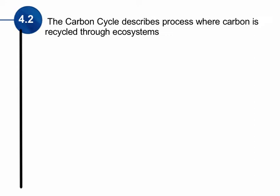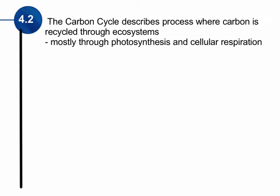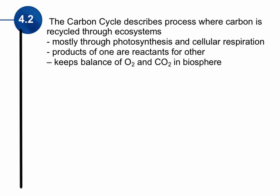The carbon cycle is a process where carbon is recycled through ecosystems, constantly cycling through. Most times this recycling occurs through photosynthesis and cellular respiration. Plants take in carbon dioxide and release oxygen. Cellular respiration takes in oxygen and releases carbon dioxide. The products of one are the reactants for the other, which keeps a balance of CO2 and O2.